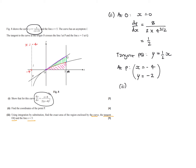The first thing we need to do is work out the coordinates of point Q. At Q, x is equal to 5 as it's on the line x equals 5. Q sits on the tangent, and the tangent has equation y equals a half x, so y is equal to 5 over 2 at Q. So we can now work out the area of triangle OMQ: it's a half multiplied by the base length of 5 multiplied by the height of 5 over 2, which comes to a value of 25 over 4 square units.